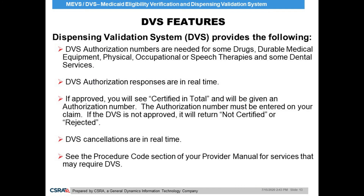The MEVS DVS Provider Manual also supplies reference sections for those who are required to obtain a DVS for procedures. The dispensing validation system is used by providers who need to obtain a quick system-generated authorization for certain procedures such as some DME items, some dental services, and therapies. These authorizations occur in real time and a message of certified in total would be returned if the authorization is approved. Be sure to refer to the procedure code section of your specific provider manual to determine which procedures require a DVS.